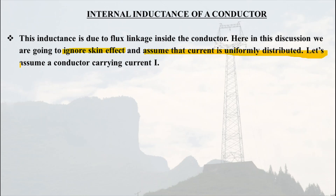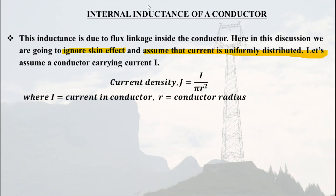Suppose there is a conductor which is carrying current I and it has radius r. The current density J can be given by current upon area — that is, J = I / (πr²). Here I is the current in the conductor and r is the radius of the conductor.